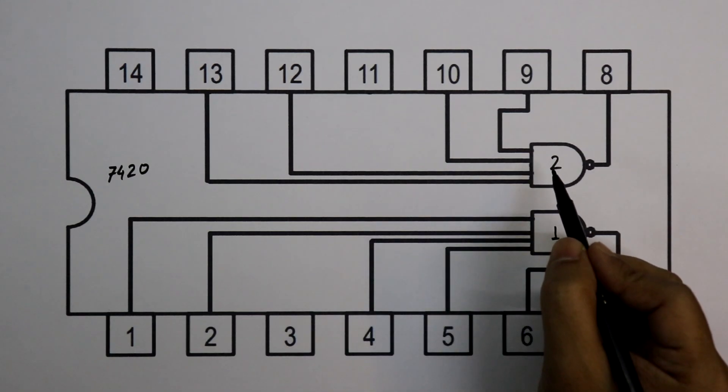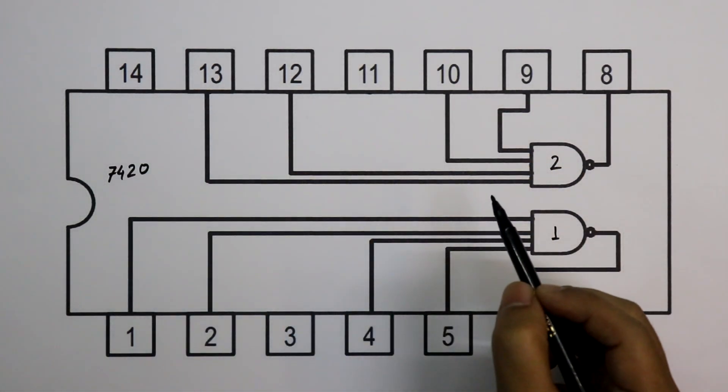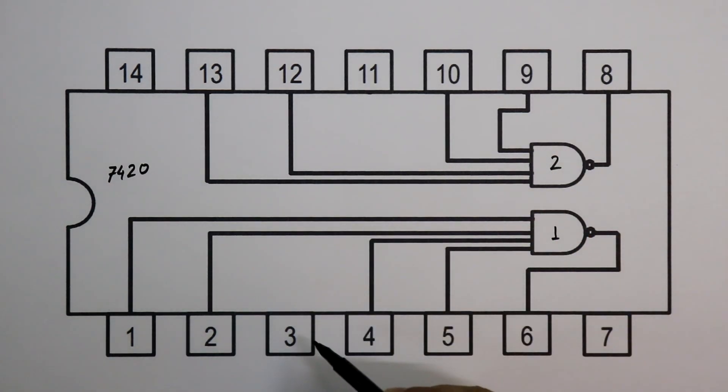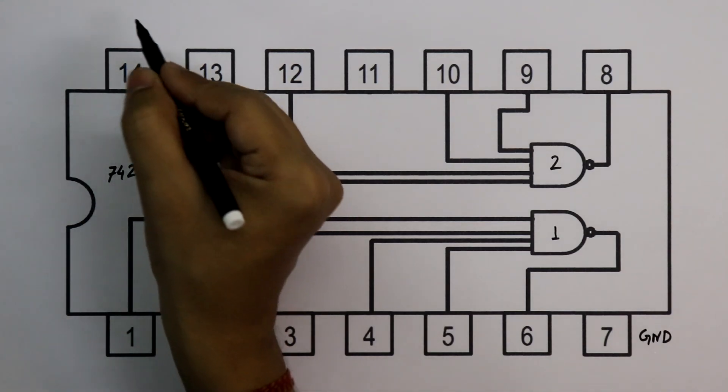And for gate 2, pin number 9, 10, 12 and 13 are the inputs and pin number 8 is output. Pin number 11 and 3 are no connection pins. Pin number 7 is ground pin and pin number 14 is plus VCC.